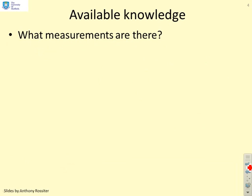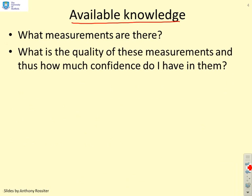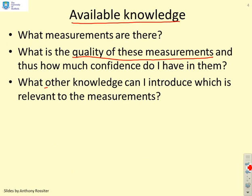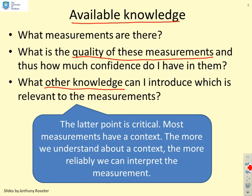First, we have to clarify what we mean by available knowledge. What measurements have we got, and what is the quality of those measurements — how much confidence do we have in them? If you have a low quality measurement, you may not want to use it. Critically, what other knowledge can we introduce that is relevant? If we've got other knowledge, we can use this with the measurements to create additional knowledge. Most measurements have a context, and by understanding that context, we're able to interpret the measurement much more reliably.